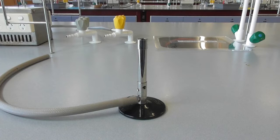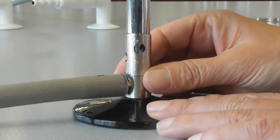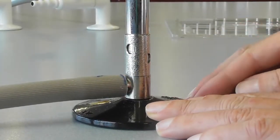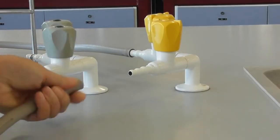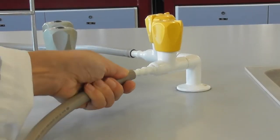In these labs, Bunsen burners will already have a hose attached to them. The first step is to ensure that the air intake at the base of the Bunsen burner is closed. Attach the other end of the hose to the gas outlet.